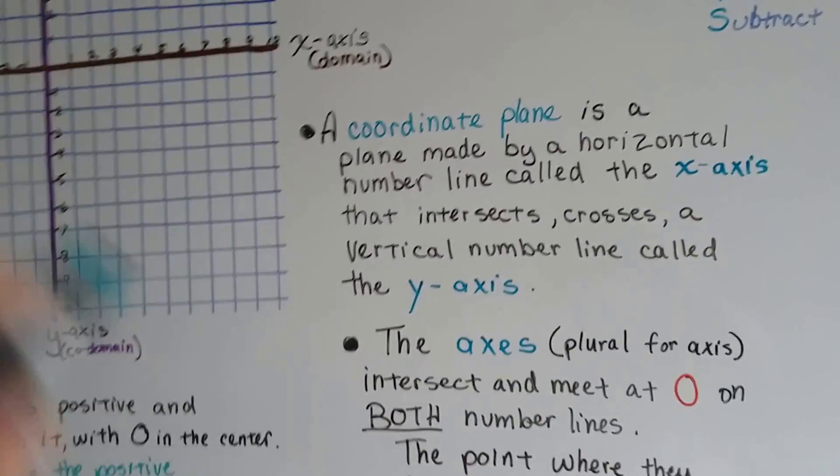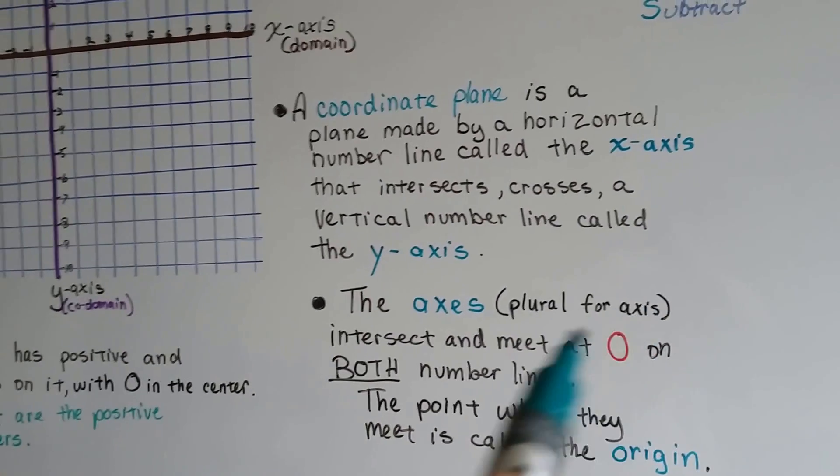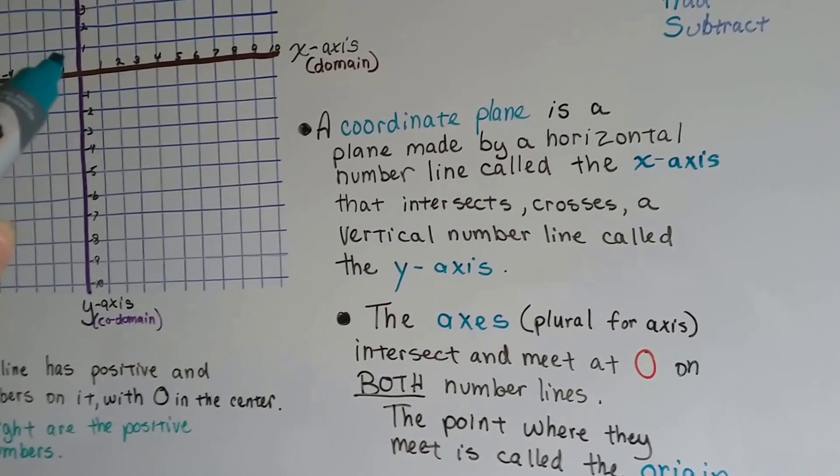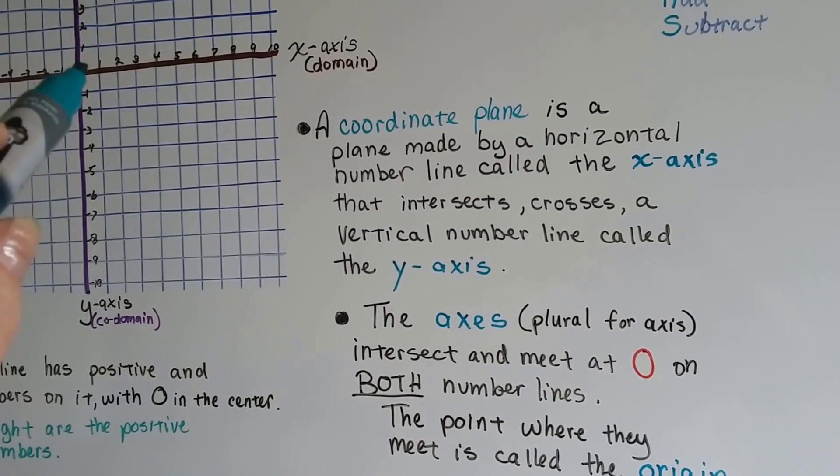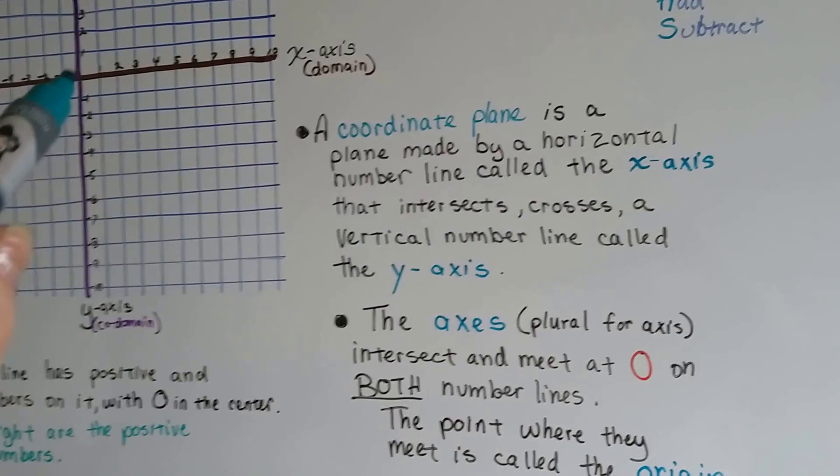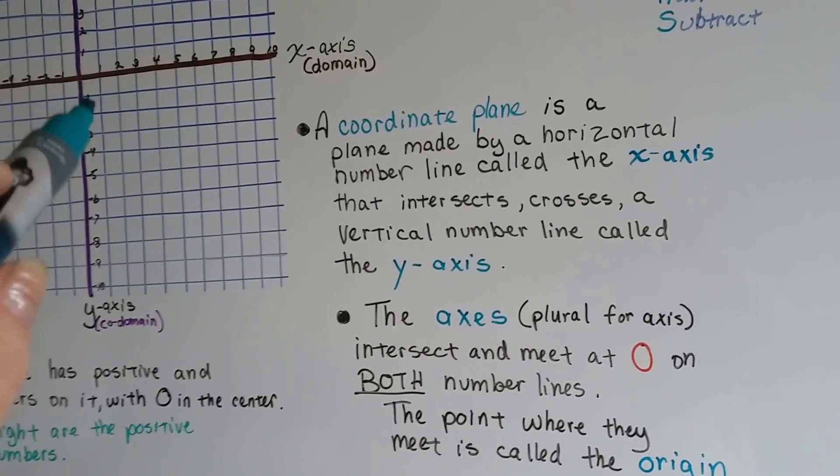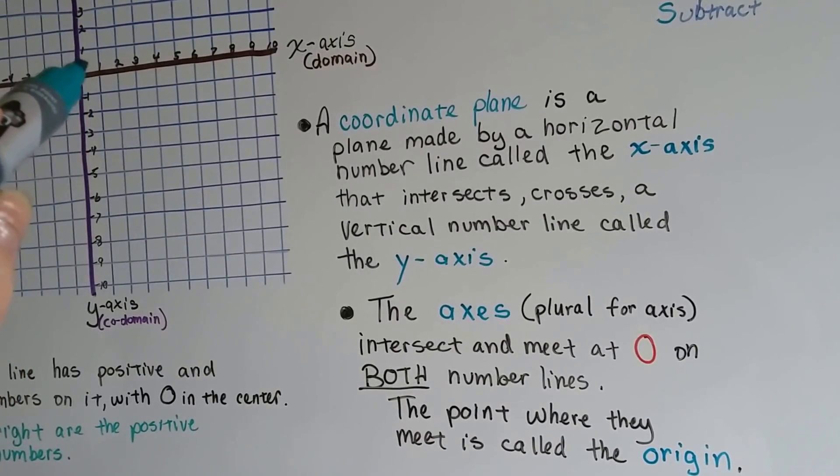The axes, that's plural for axis, intersect and meet at zero, right here in the center where both number lines intersect. The point where they meet is called the origin.